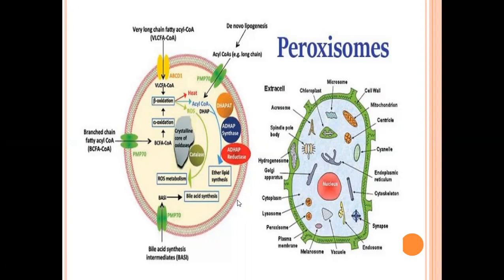Peroxisomes mainly help in producing oxidative enzymes. The oxidative enzymes are called peroxidase. The peroxidase are mainly produced by peroxisomes.